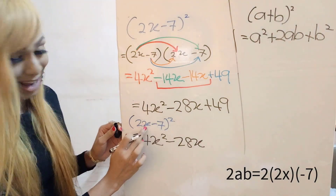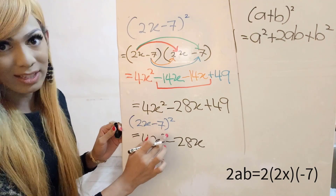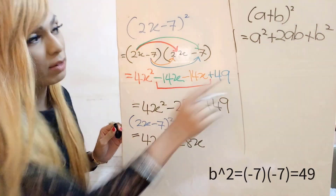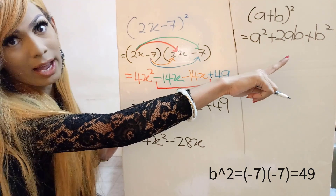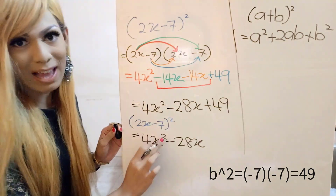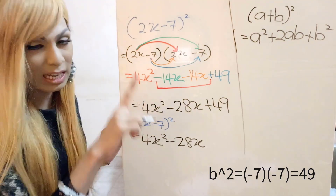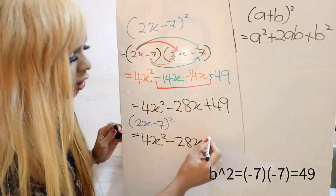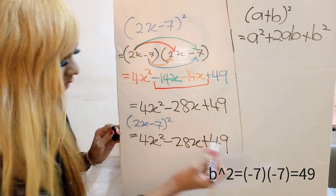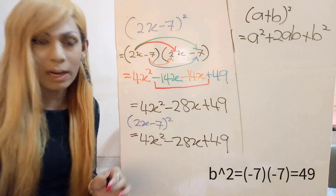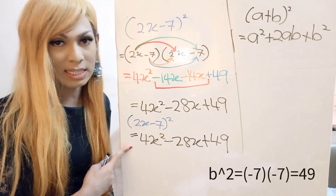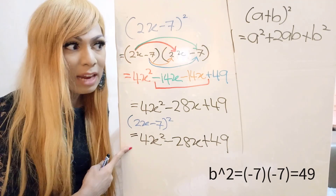Then b squared: (negative 7) squared gives positive 49. So the answer is 4x squared minus 28x plus 49 — same answer, by just one line. You save space and save time.